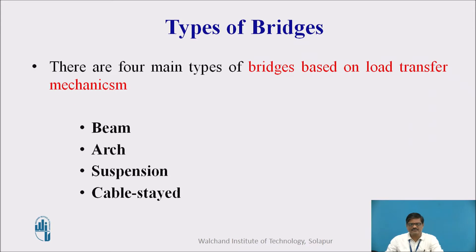Now there are four main types of bridges which are based on the load transfer mechanism. One is a beam, the second one is an arch, the third one is a suspension, and the fourth one is a cable-stayed. In all such types of bridges, the load transfer mechanism is very, very specific.